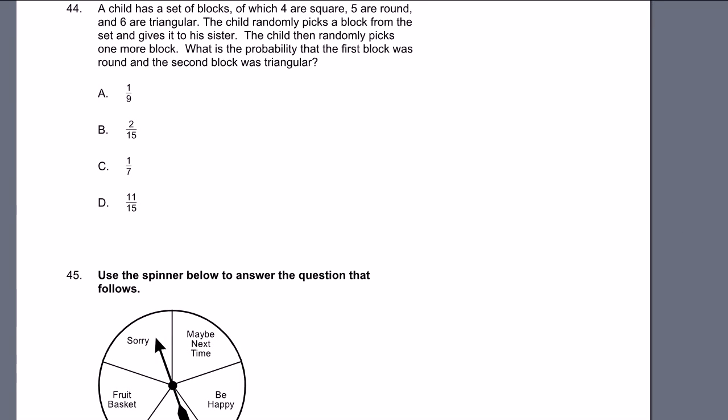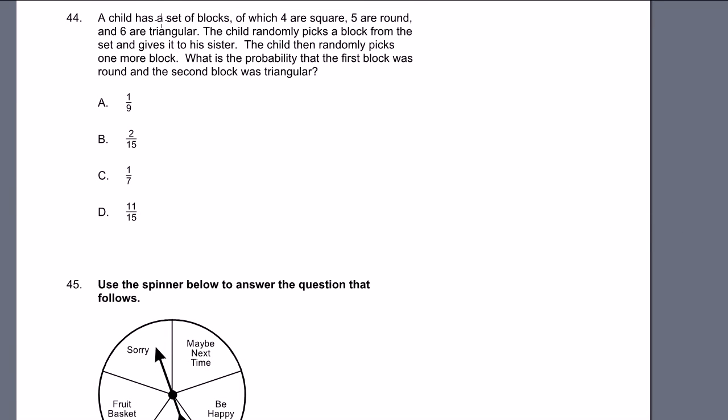Problem 44. A child has a set of blocks, four of which are square, five are round, and six are triangular. The child randomly picks a block from the set and gives it to his sister. The child then randomly picks one more block. So he didn't put that block back in. What is the probability that the first block was round and the second block was triangular? So we start off with 15 blocks total.